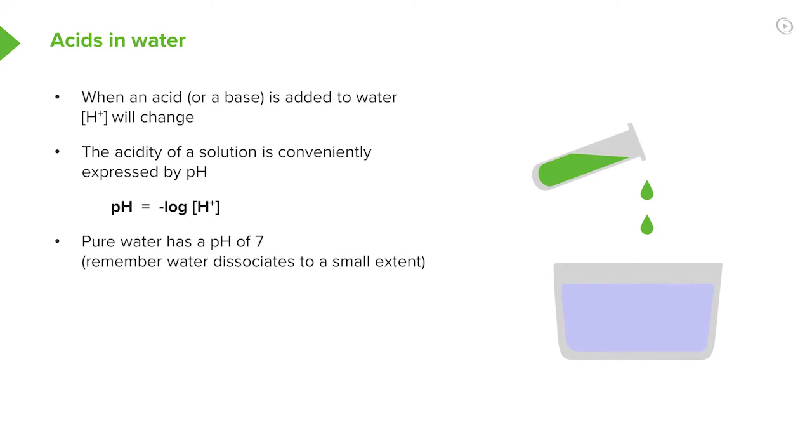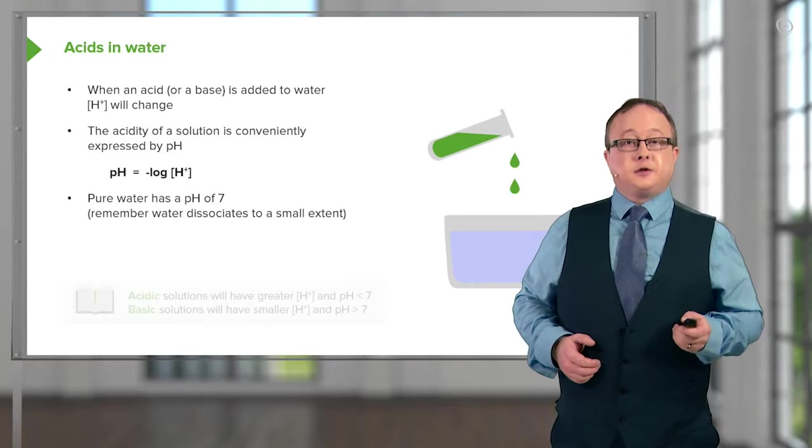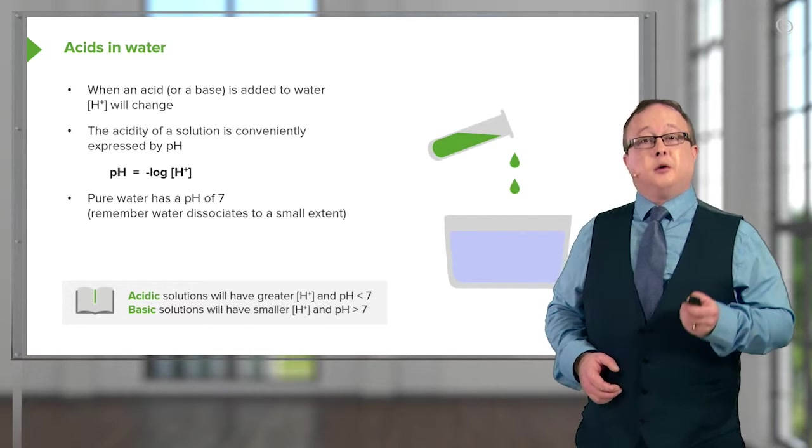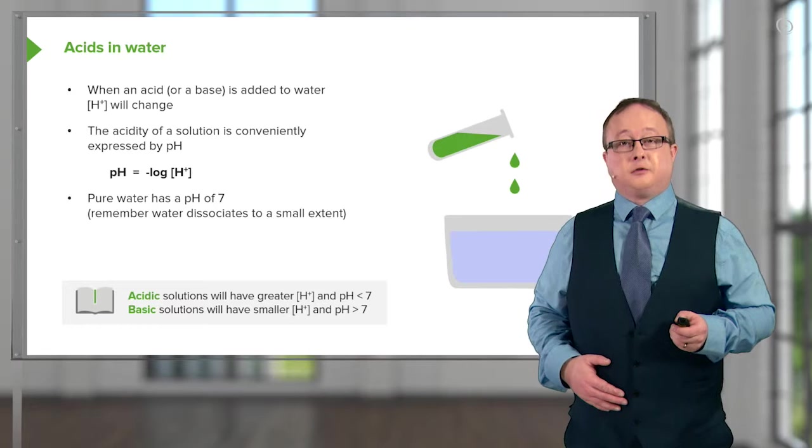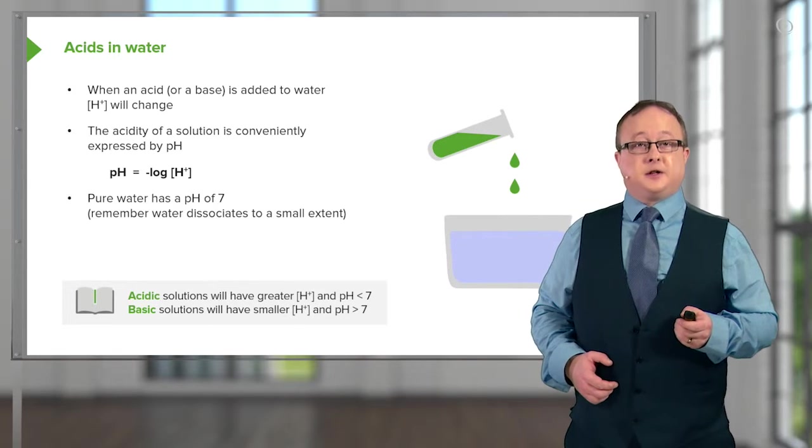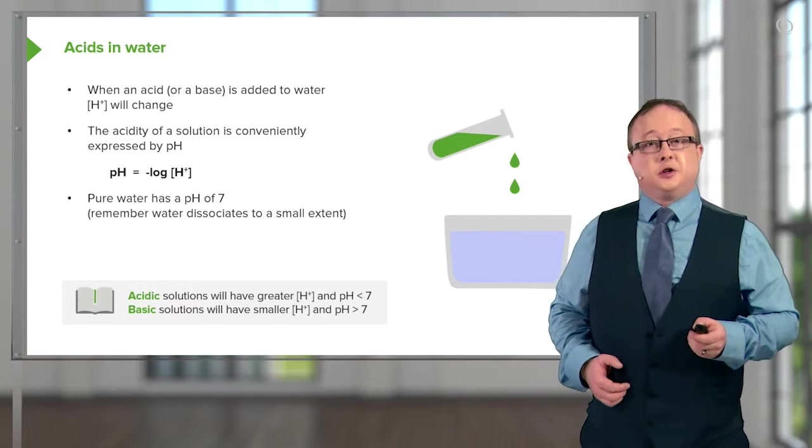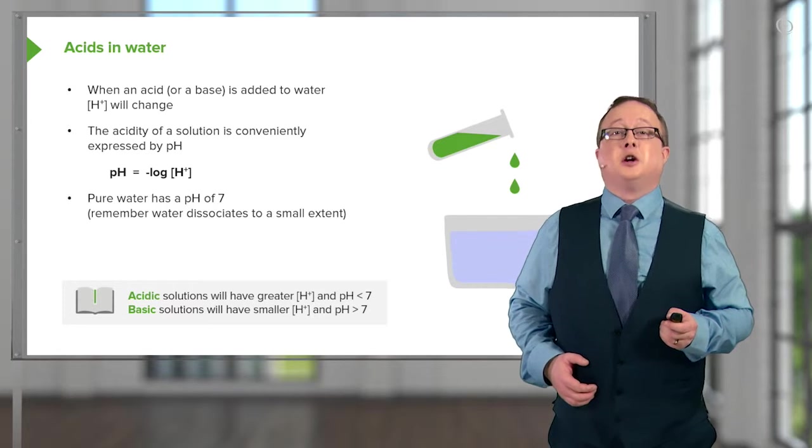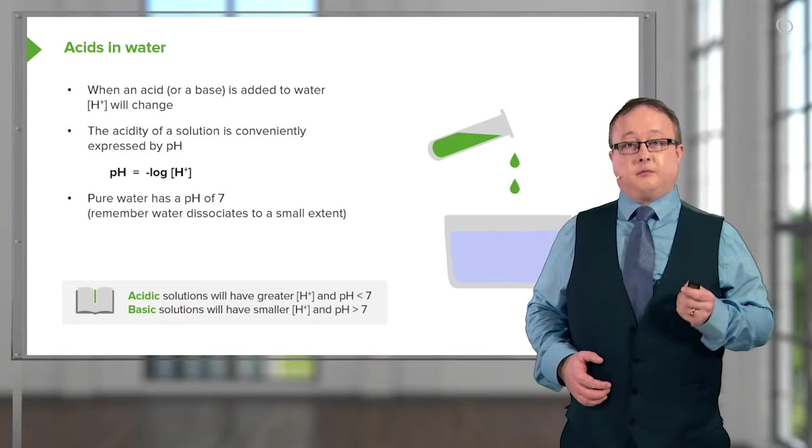Remember, pure water has a pH of 7 and also dissociates to a small extent. Acidic solutions will always give a greater concentration of H⁺ than exists in water and have a pH less than 7. Basic solutions will have a smaller concentration of H⁺ free in solution and have a pH greater than 7. Always.